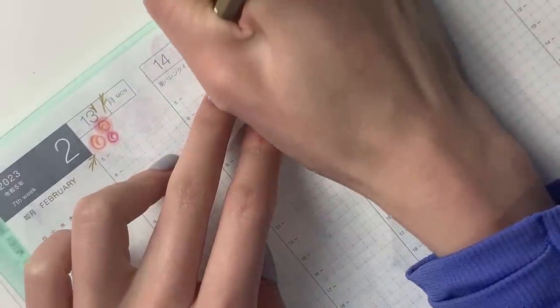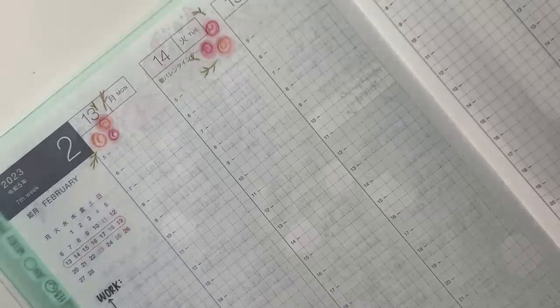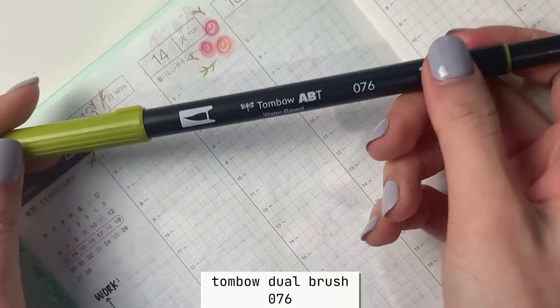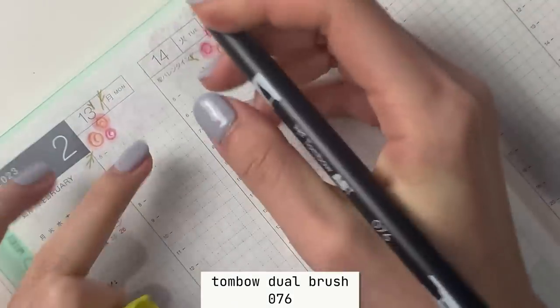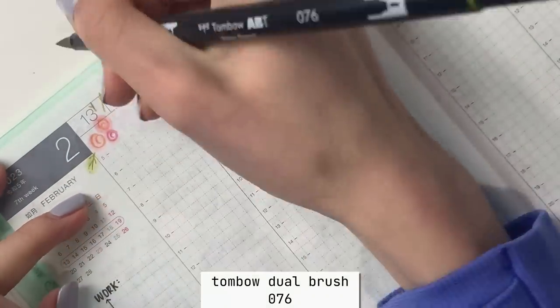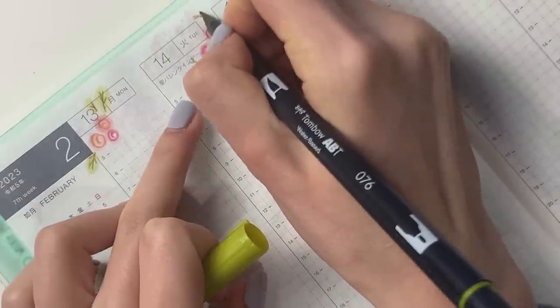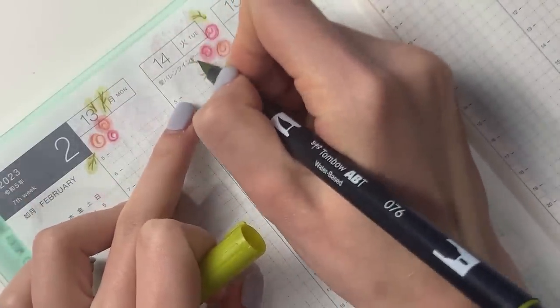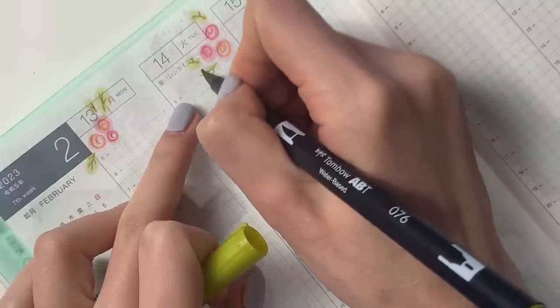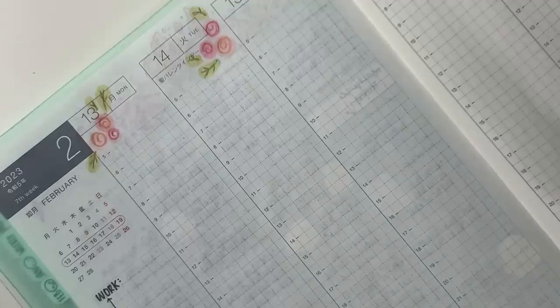And then I'm also going to use this green from Caran d'Ache. And I'm going to draw a little, like the stem of the little leaves. Also using a heavy hand. And then you can probably guess, I'm going to use 076, my choice of green. And I'm going to just color over the leaves. The key is to pick a color that is significantly lighter than the colored pencil that you're printing down. I think that looks so cute.